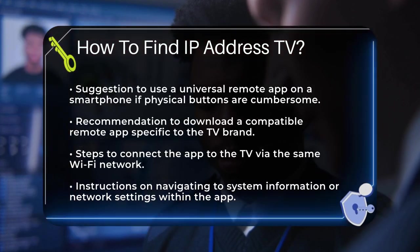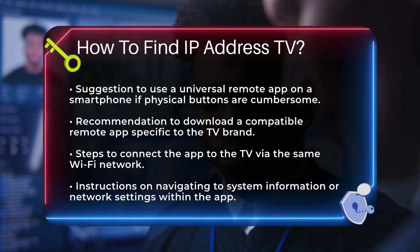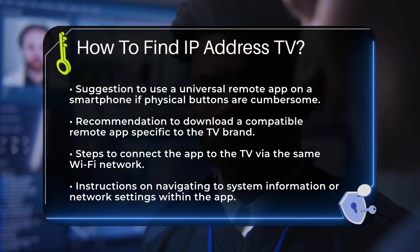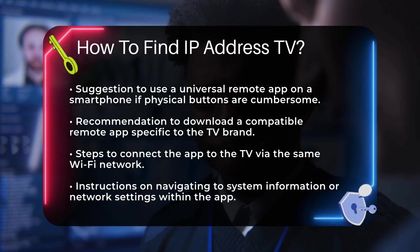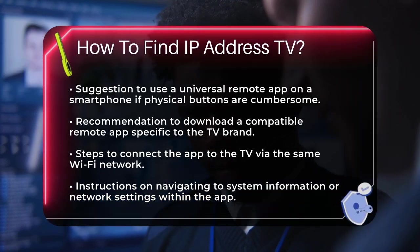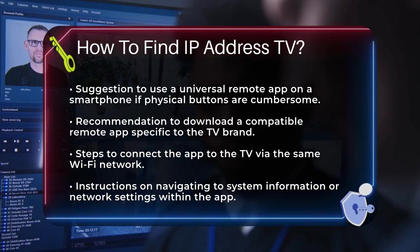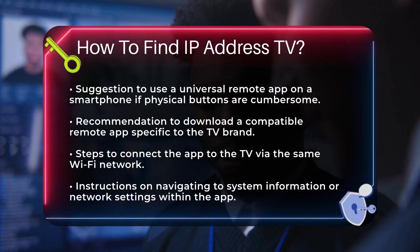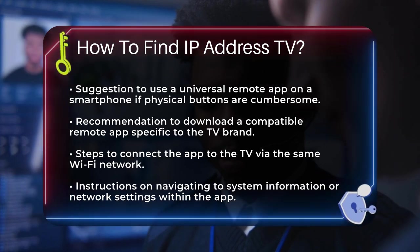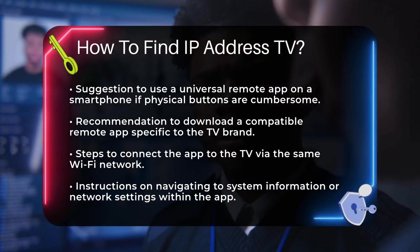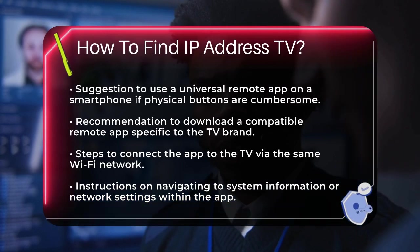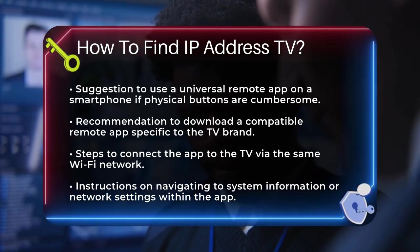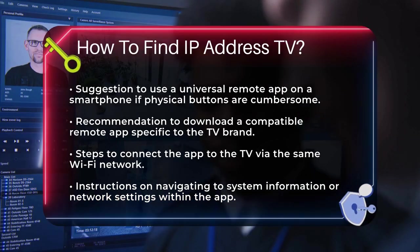If navigating through the menu with physical buttons seems too cumbersome, you can use a universal remote app on your smartphone. Download an app that is compatible with your TV brand — for example, a Vizio TV remote app for Vizio TVs. Once you've downloaded and launched the app, follow the on-screen instructions to connect it to your TV through the same Wi-Fi network. Then use the app to navigate to the system information or network settings to find the IP address.